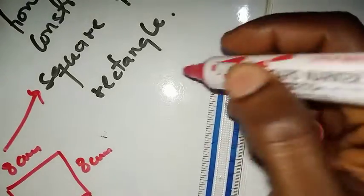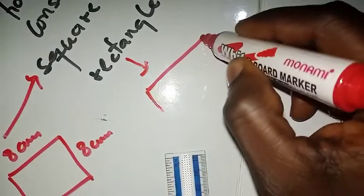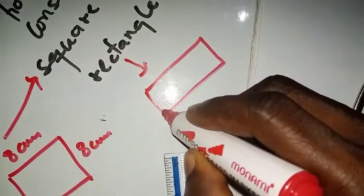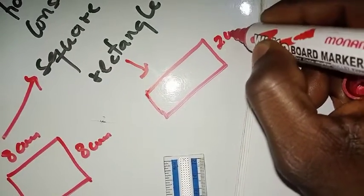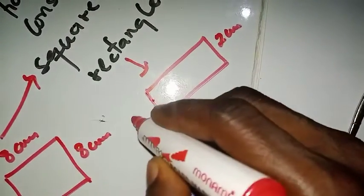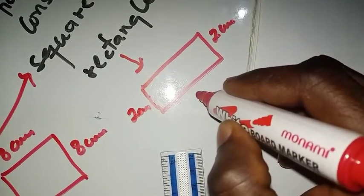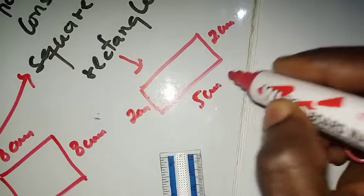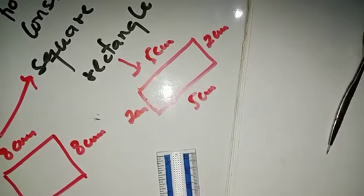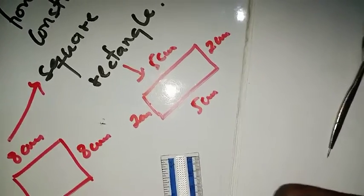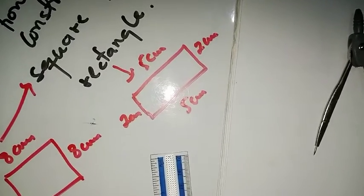Talking about a rectangle, a rectangle has the property that two opposite sides are equal. So if one side is two centimeters, the opposite side must also be two centimeters. And if another side is five centimeters, then the opposite side must also be five centimeters. These are the two most important things to understand before constructing a square or rectangle.